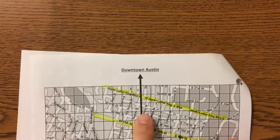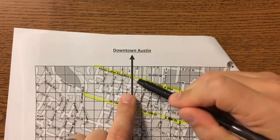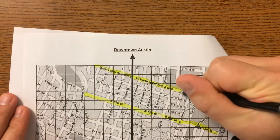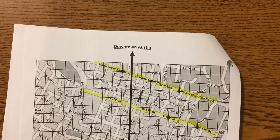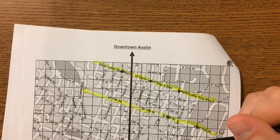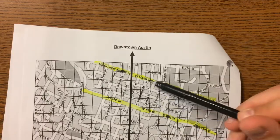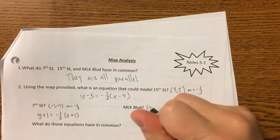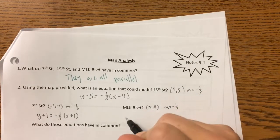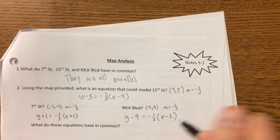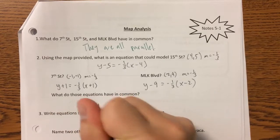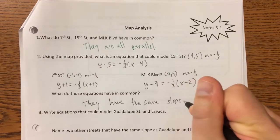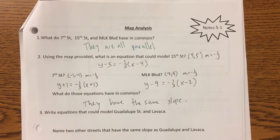Let's look at MLK Boulevard. Again, we'll use point-slope form since the y-intercept looks like a fraction. We've got points close to the street — let's use (2, 9). The slope is negative one-third again. So the equation is: y minus 9 equals negative one-third times x minus 2. What do all three equations have in common? They all have the same slope — negative one-third — and they're all parallel.